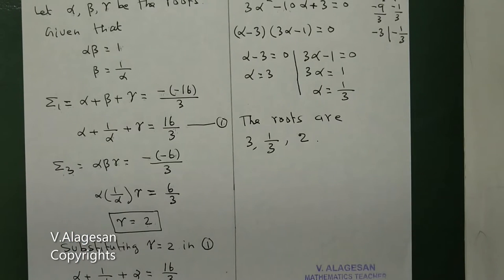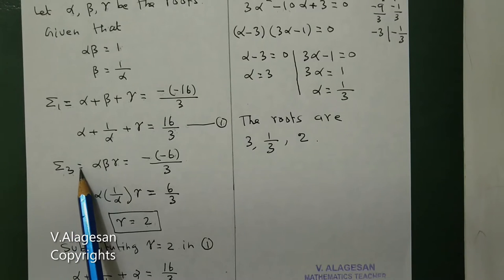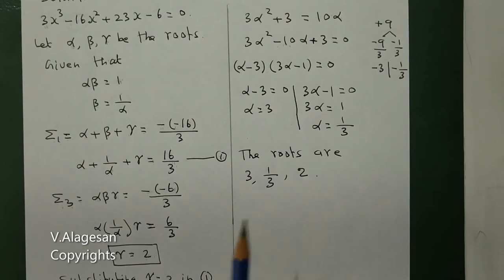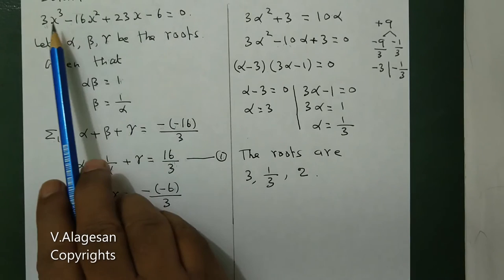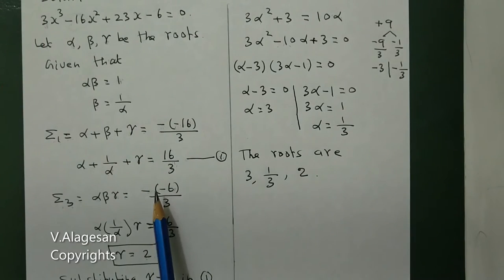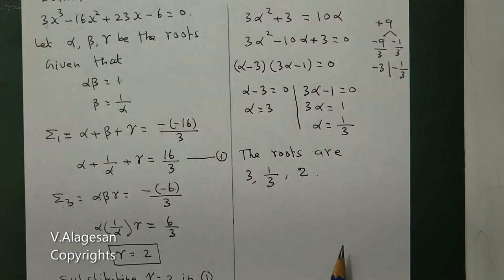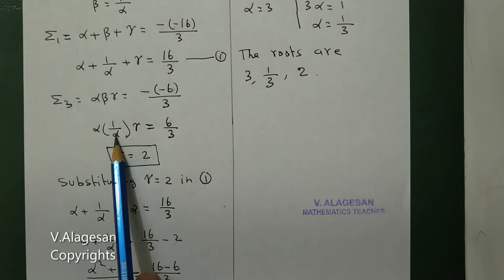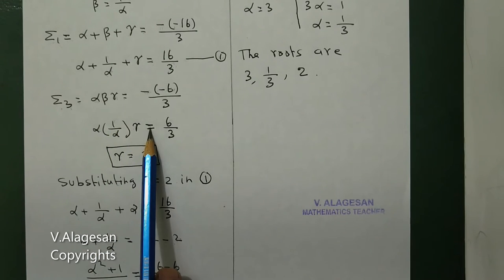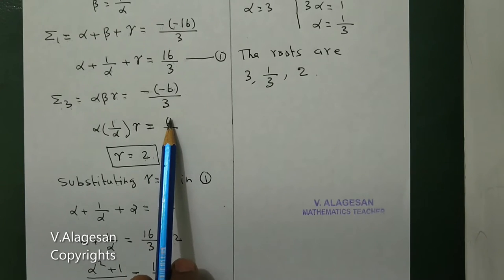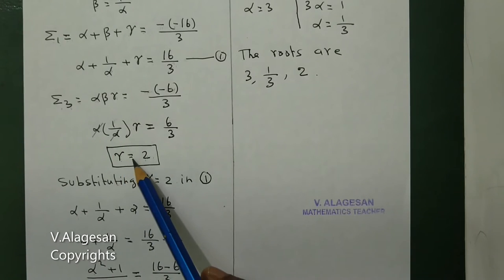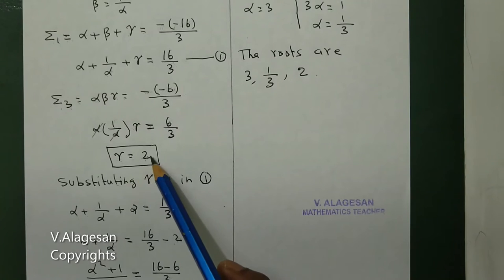Next, summation 2 is not required. We have to find summation 3. The product of 3 roots equals minus constant term divided by coefficient of x cubed, which gives minus of minus 6 by 3. Left side: alpha times 1 by alpha times gamma equals 6 by 3. Alpha cancels with alpha, so gamma equals 6 by 3, which is 2. So gamma equals 2. One root is found.